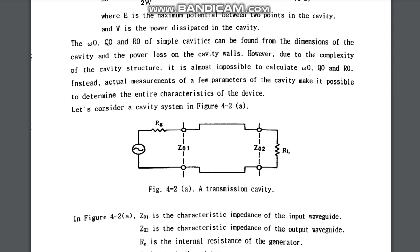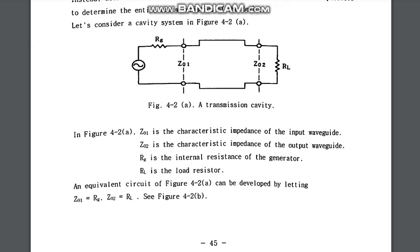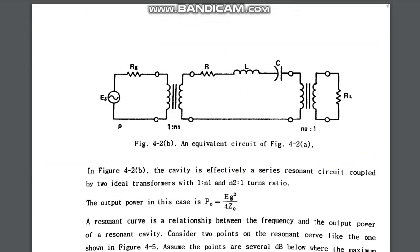This is the transmission cavity system showing the input and output. Z01 is the characteristic impedance of the input waveguide and Z02 is the characteristic impedance of the output waveguide. RG is the internal resistance of the generator and RL is the load resistor. This can be developed by letting Z01 equal RG and Z02 equal RL.